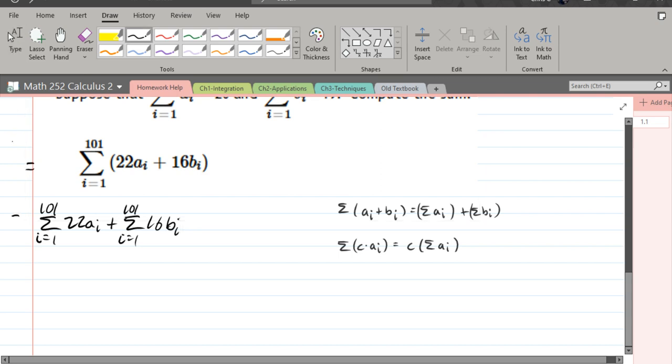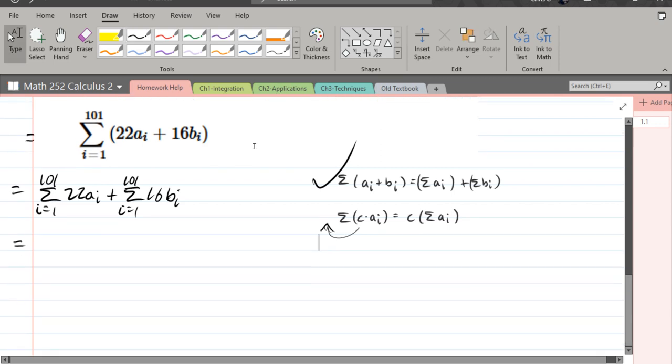So these are equal. And next thing we're going to do, that took the first formula here, just the reordering. Now we're going to use the second one. And what that lets us do is it lets us bring that constant C out front. So we're going to go ahead and do that now. What's our constant? Well, the first one constant is 22, and the second one's constant is 16.